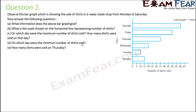The bar graph is showing the sale of shirts in a ready-made shop from Monday to Saturday. Answer the following questions. Horizontal bars are drawn and you will have to answer these questions. First: what information does the above bar graph give? This bar graph gives information about the number of shirts sold on different days.